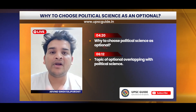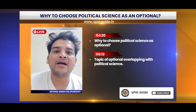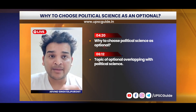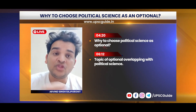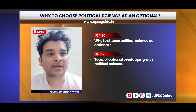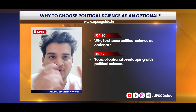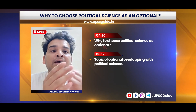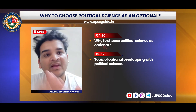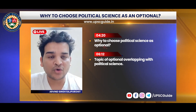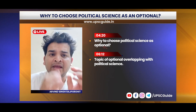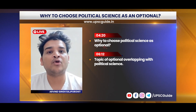You have to study these thinkers for GS4 anyway, so choosing political science as an optional is beneficial. Then there are Indian political thinkers, where you have to learn Indian traditions - Buddhist traditions, Hindu traditions - and Kautilya. Then Dr. Baba Sahib Ambedkar, whose Jayanti is on 14th April, you have to learn in detail. Then Aurobindo and MN Roy. So learning Indian political thinkers is a great benefit, even for prelims.